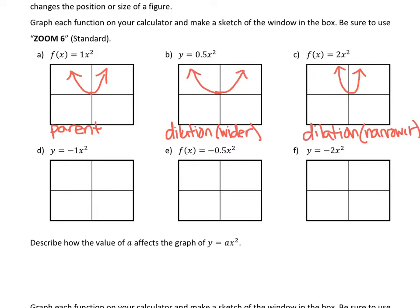Go to your y equals. Clear out y2 and type in letter d, negative 1x squared. This is what you see. We are relating these to the parent function. What happened here is a reflection. It reflected over the x-axis.